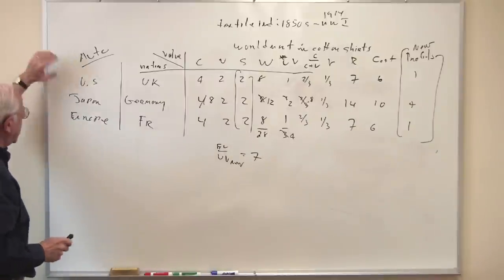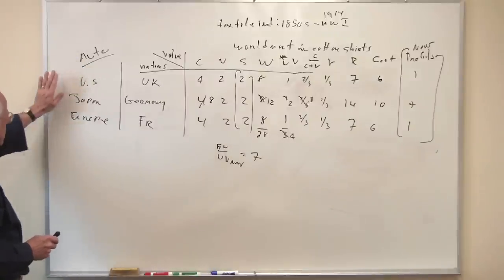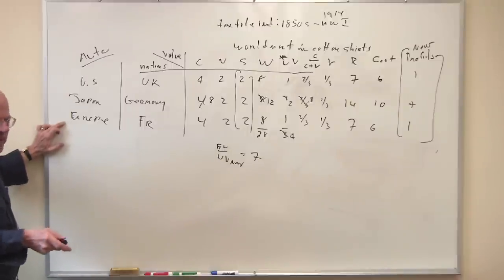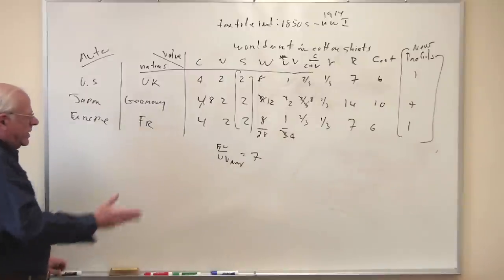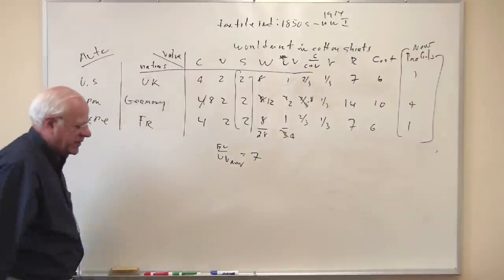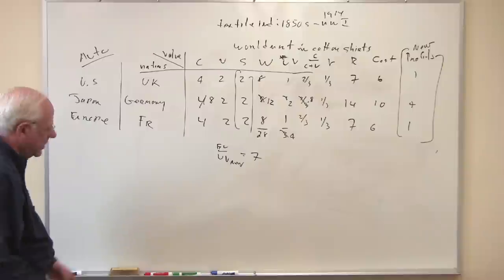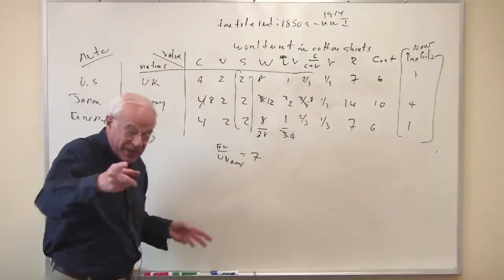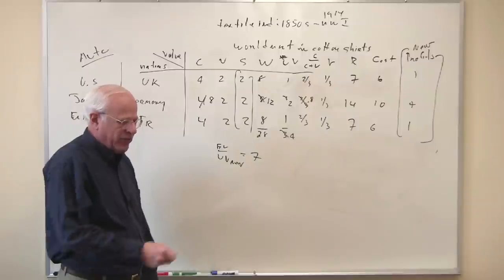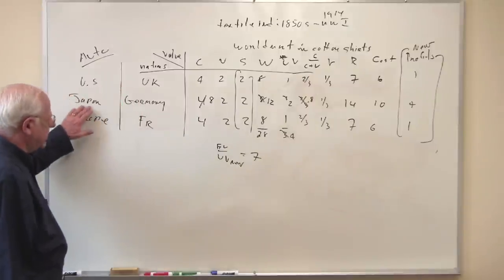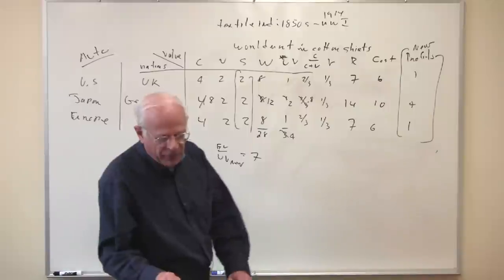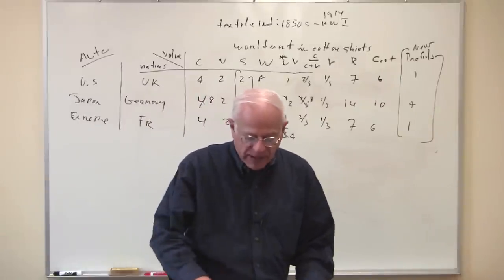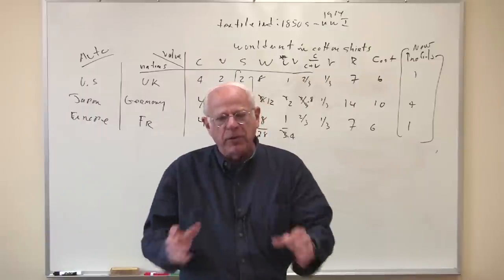You can extend this to the computer industry today. Here you could put US, over here you could put the newcomer on the block, China, Japan. And as the Chinese raise their organic composition of capital, raise the productivity of labor in China, if that just continues, then the American and the Japanese computer industries would be driven out of business by the more efficient Chinese. So it's a powerful way of trying to explain what might happen as a result of global competition.